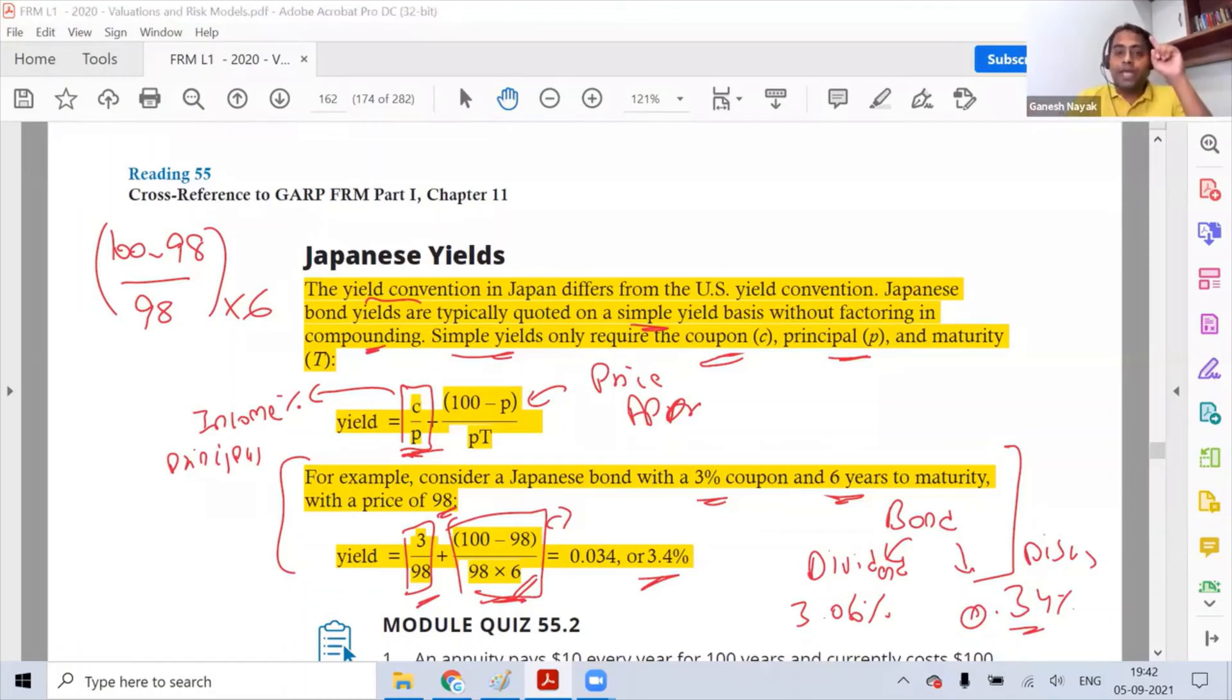Because see, you are going to pay now 98 and then after 6 years you are going to get 100—that's the maturity value. So that benefit or the growth that you are getting is only going to be for 6 years. So we are dividing by 6 and we are getting this answer, and adding both of them you are getting the yield of 3.4%. Is everybody okay with this?